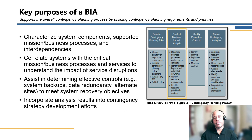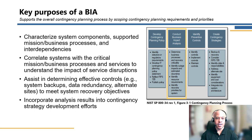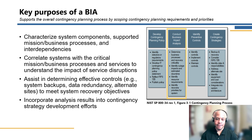There are a few key purposes of a BIA. First, you want to understand the components that support the business processes as defined, and really understand those interdependencies to be able to analyze any impacts to systems that would affect the actual business process itself. Once you have those correlations, it'll help determine effective controls to prevent any impacts — whether those are system backups, redundant systems, manual processes, etc. Ultimately, the BIA analysis rolls into the larger contingency strategy development efforts, as shown in the figure here.